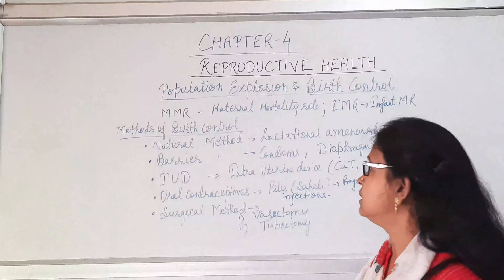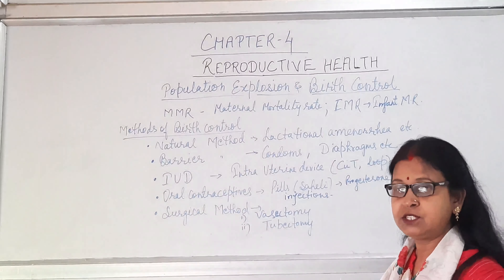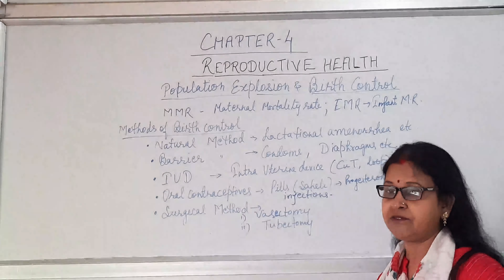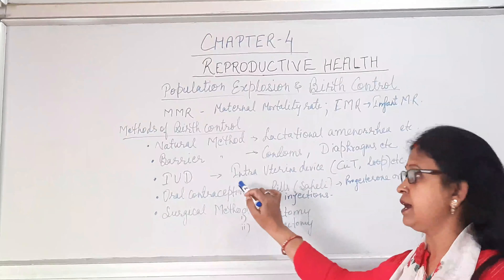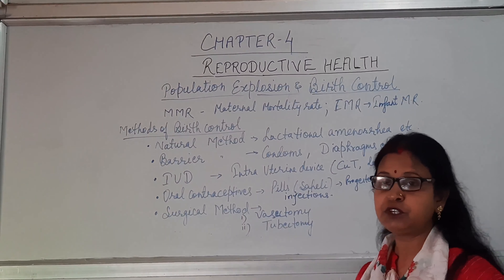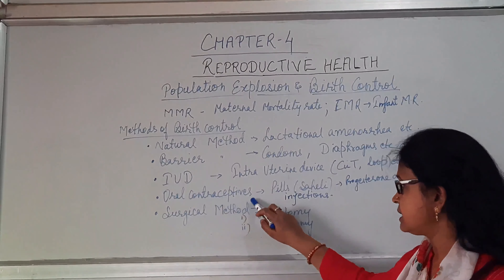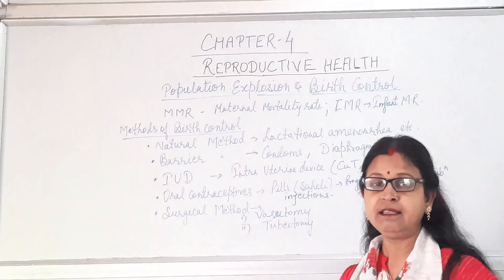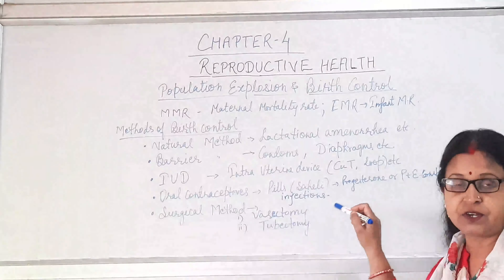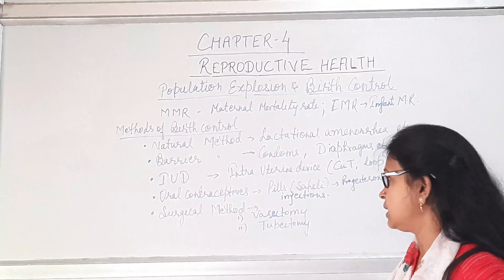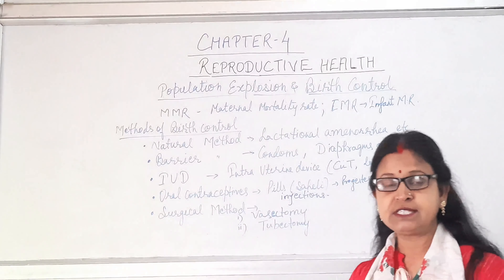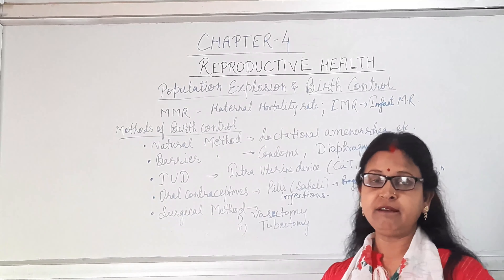There are different methods of birth control. The first is the natural method, such as lactation amenorrhea. Then there are barrier methods like condoms, diaphragms, etc. IUDs — intrauterine devices — such as copper-T and loops prevent the fusion of sperm and ovum. Oral contraceptives in the form of pills contain progesterone alone or a combination of progesterone and estrogen, which can be given as pills or injections, taken over durations of 5, 21 days, etc., under professional guidance.